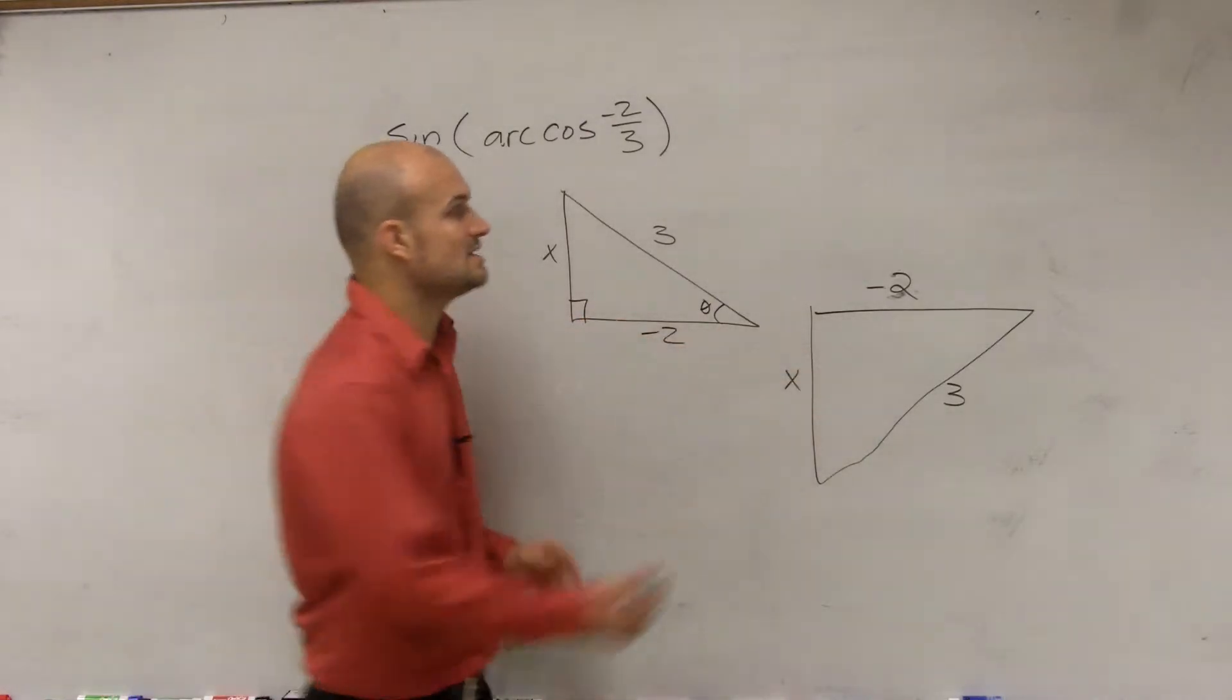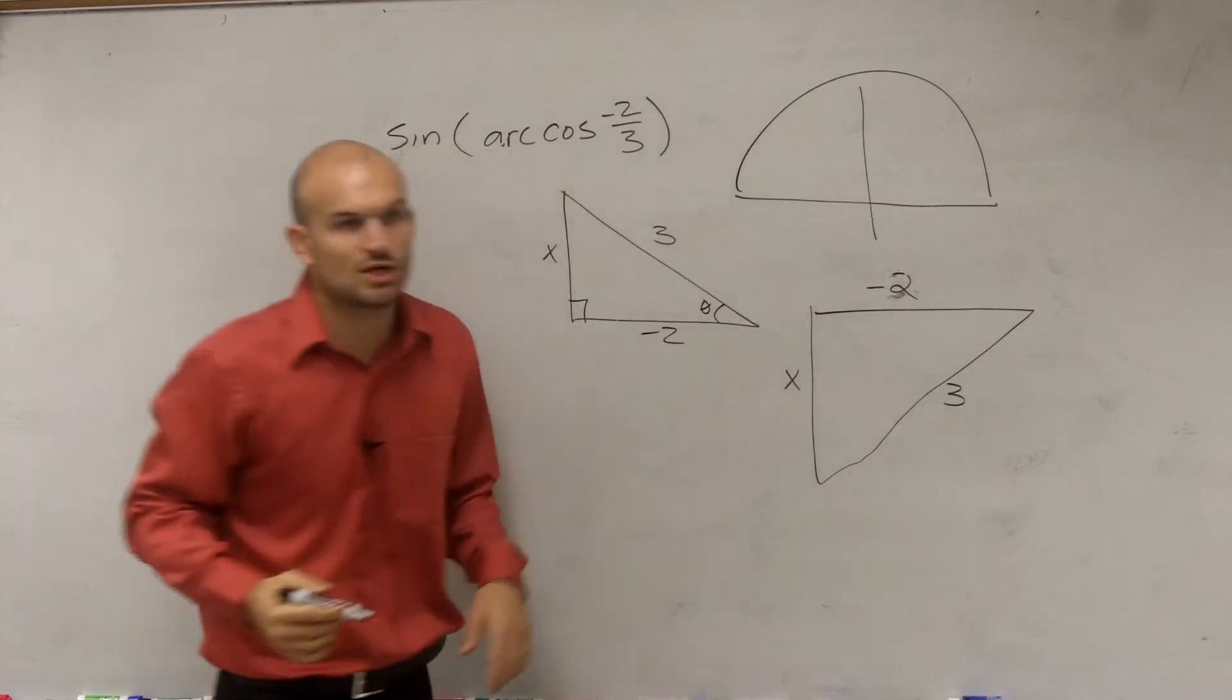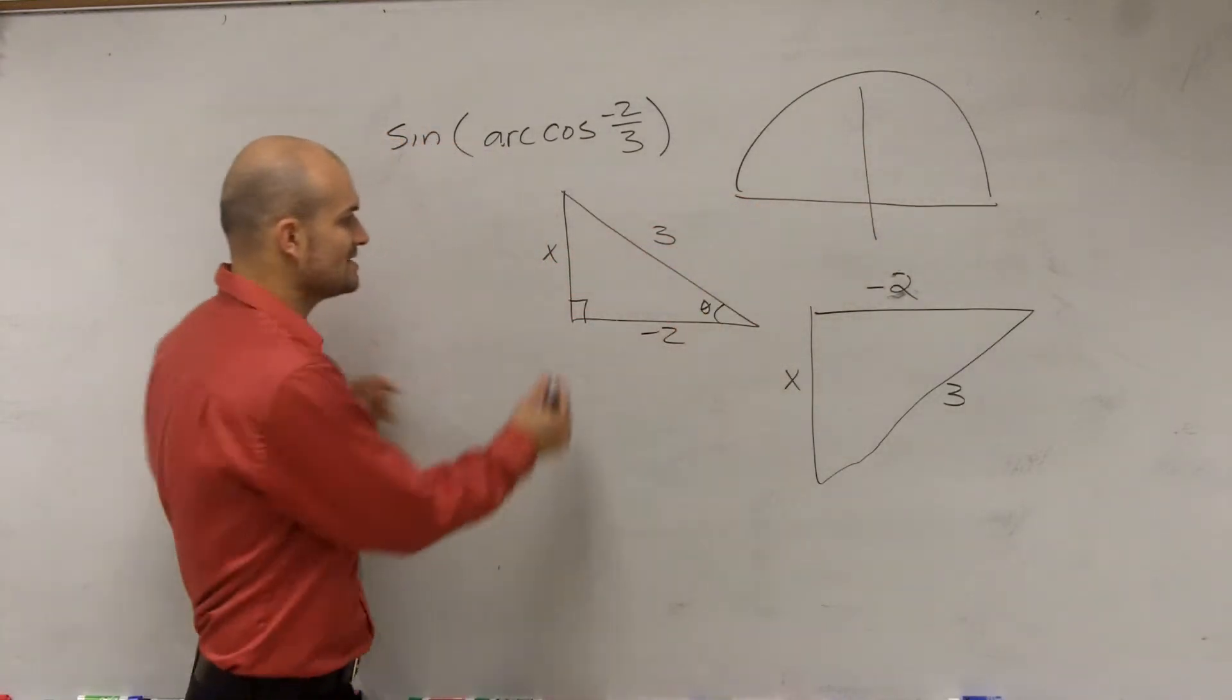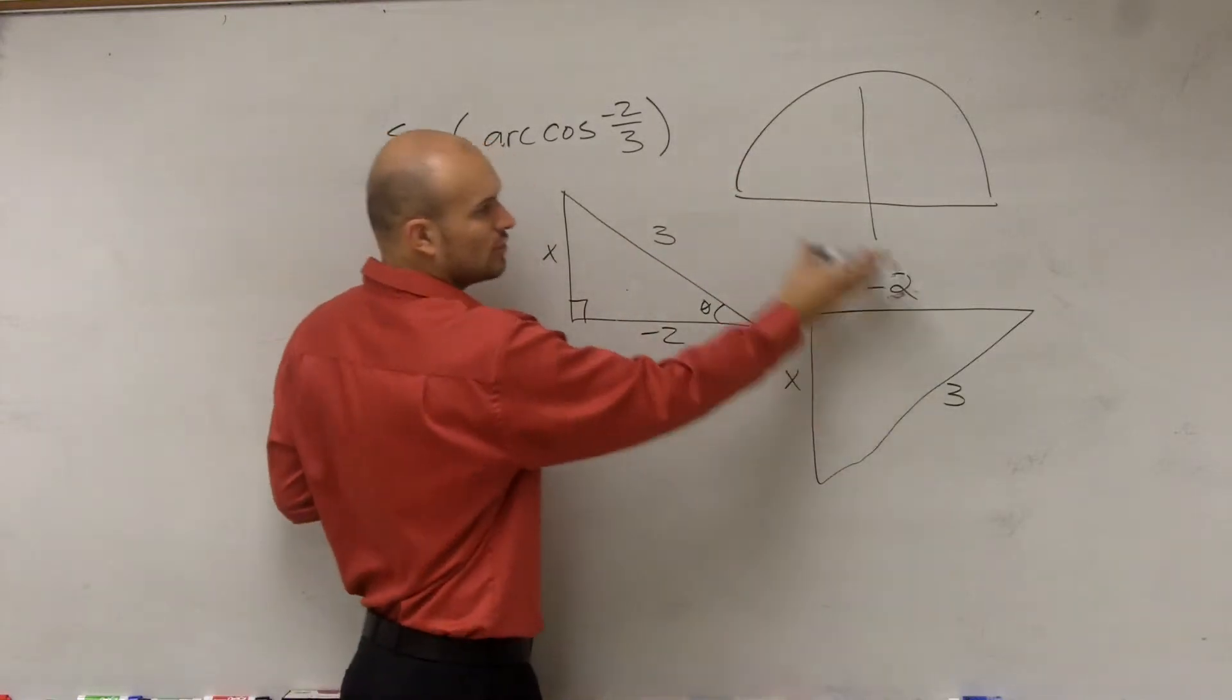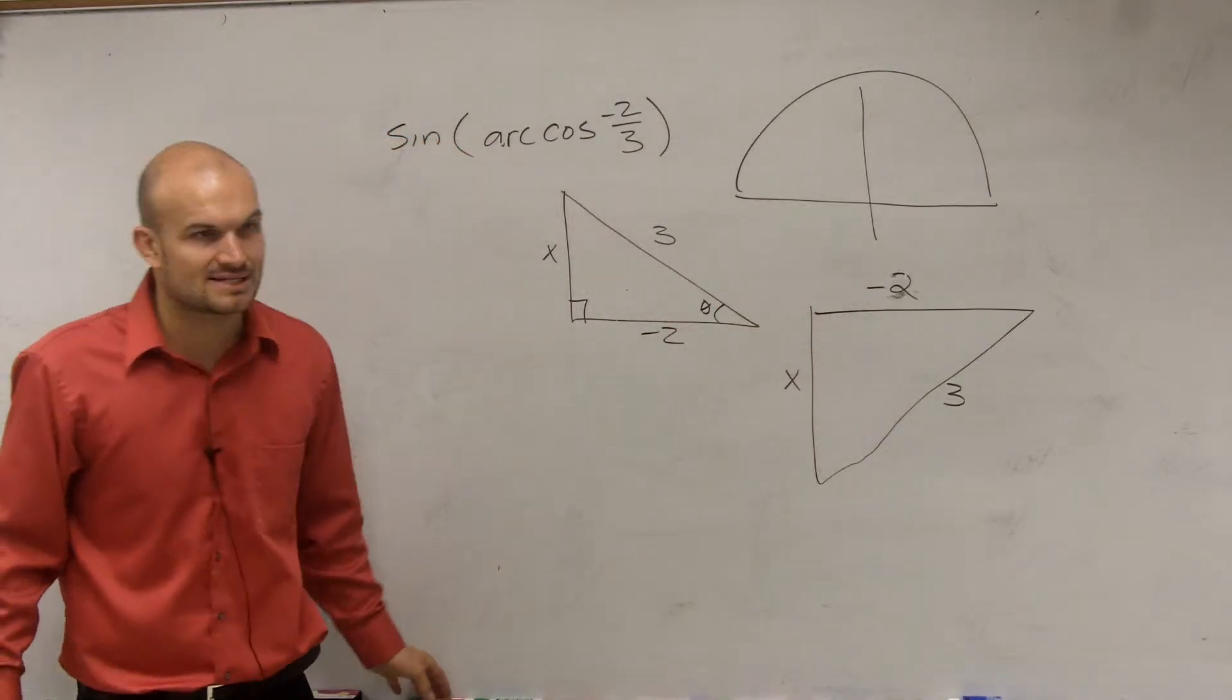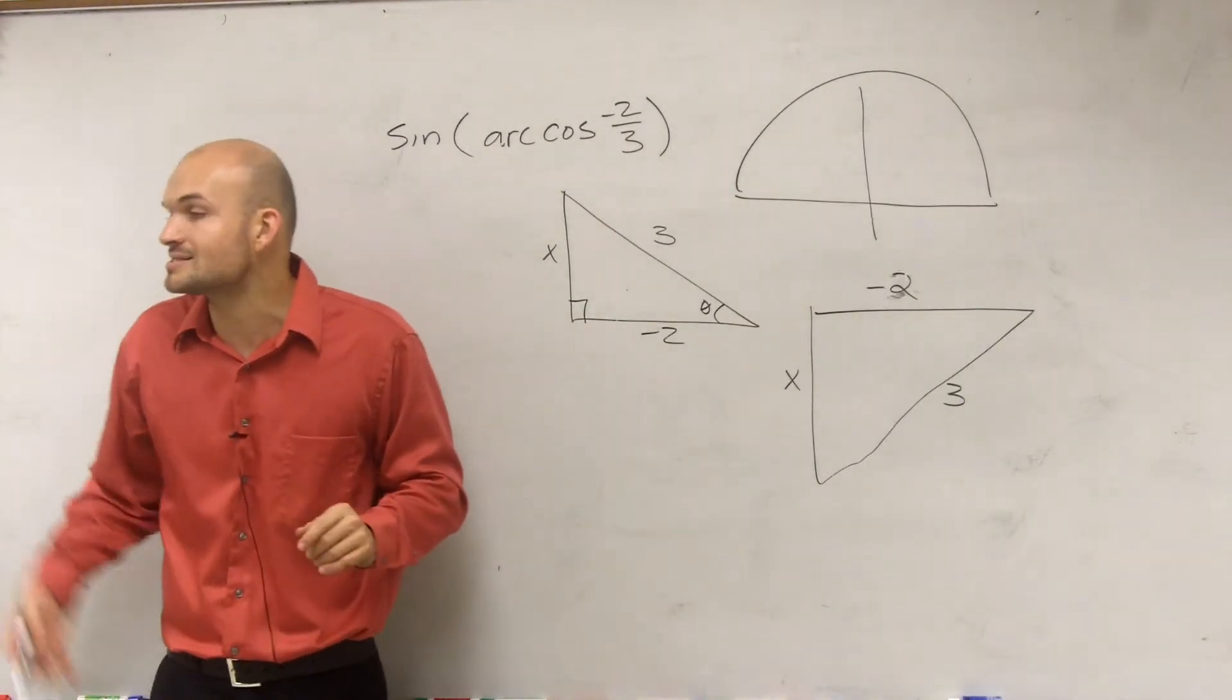So therefore, remember cosine, ladies and gentlemen, when finding the inverse of cosine, it has to be either in the first or the second quadrant. So you guys could see that this triangle would be labeled in the second quadrant. This triangle would be in the third quadrant. So that's why I'm not going to use that triangle as my example. Does that make sense? Therefore, we know that my x value is going to be positive.